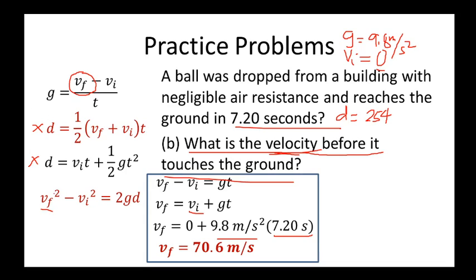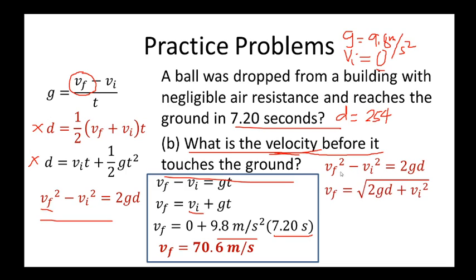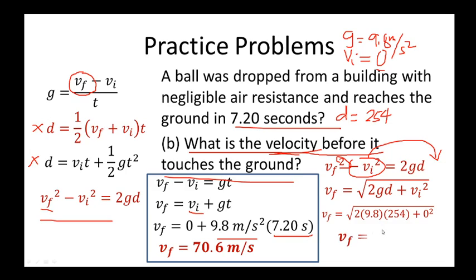Let's verify using equation 4: Vf² = Vi² + 2gd, which rearranges to Vf = √(2gd + Vi²). Substituting the values — using the distance of 254 meters computed earlier — gives the same answer of 70.6 meters per second. Either formula produces the same result; the difference is that equation 1 uses time (7.2 s) while equation 4 uses distance (254 m).